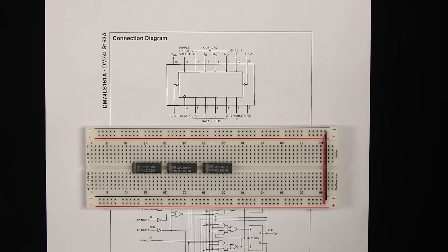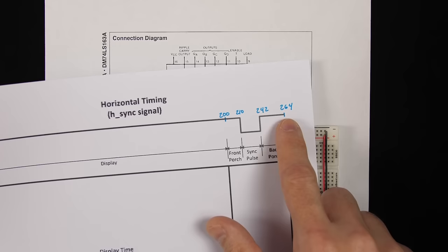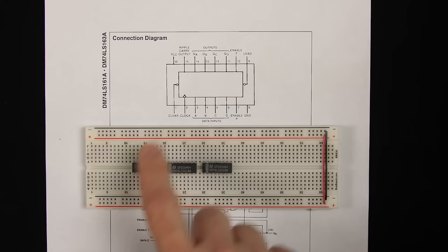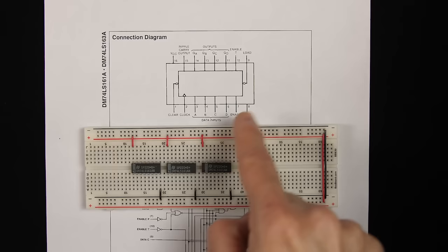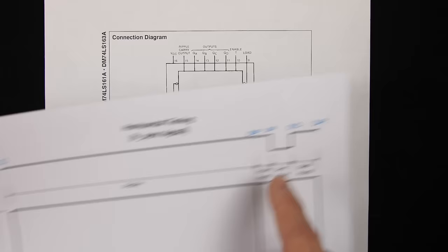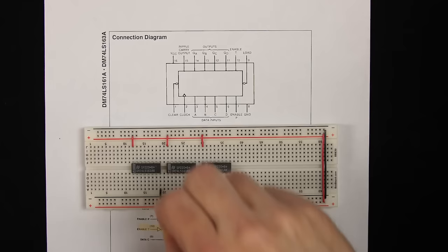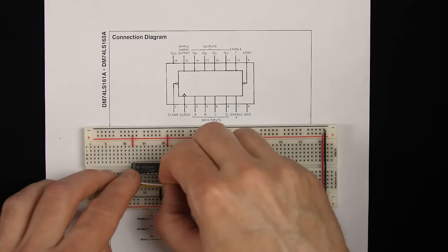To count the pixels I'm going to use the 74LS161. Since we've got to count all the way up to 264, that takes nine bits, and the 74LS161 is a four-bit counter, so I'll need three of them. I'll start by connecting the power and ground pins for each one, then go through the other pins. The clear pin resets all counters to zero, so I'll tie the clear pins together. The clock pin is the same — they'll all use the same clock, so I'll tie those together too.